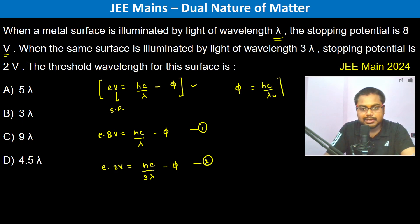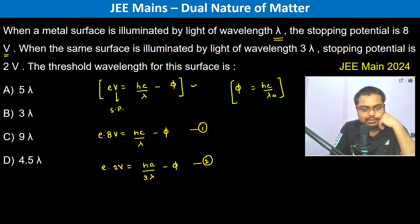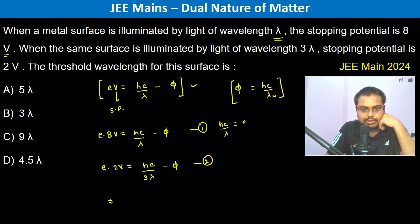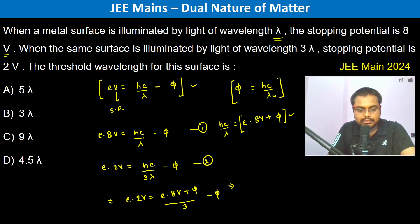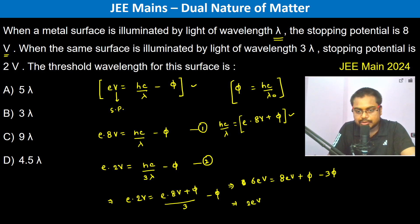From the first equation, hc by lambda equals e into 8 volts plus phi. Substituting into the second equation: e into 2 volts equals (e into 8 volts plus phi) divided by 3, minus phi. Expanding: 6 electron volts equals 8 electron volts plus phi minus 3 phi, which gives 2 electron volts equals 8 electron volts plus phi minus 3 phi.